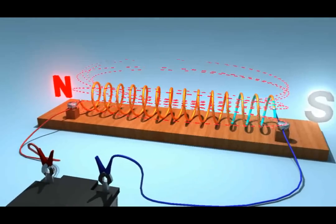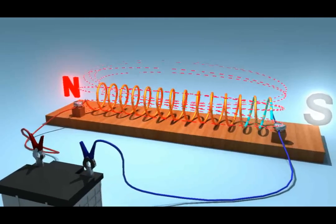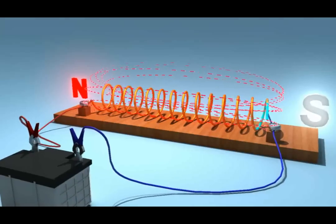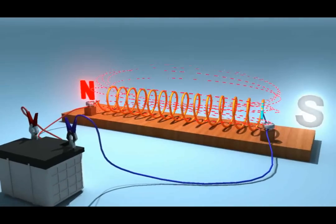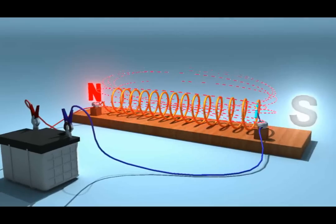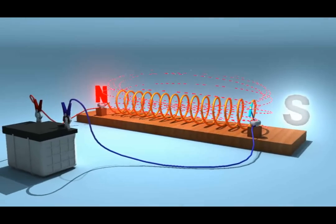The parallel lines will have the same magnitude of the magnetic field. That is why the solenoid has a uniform magnetic field.